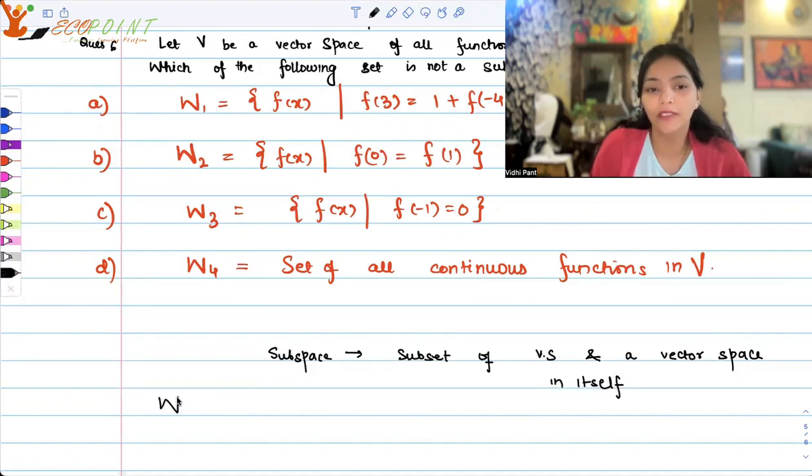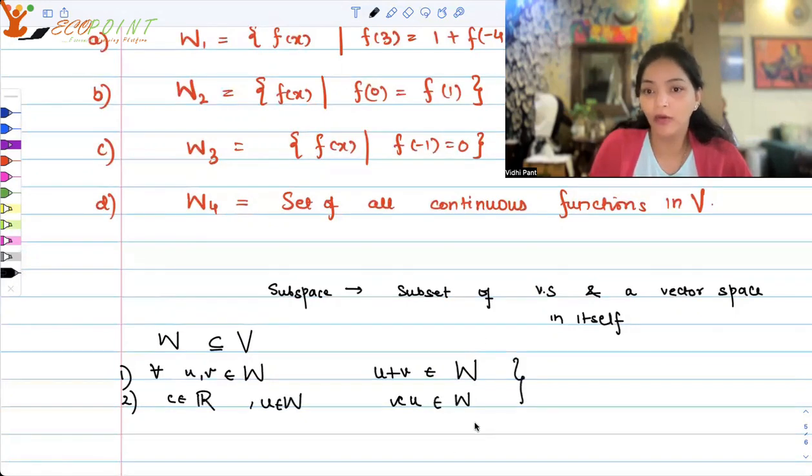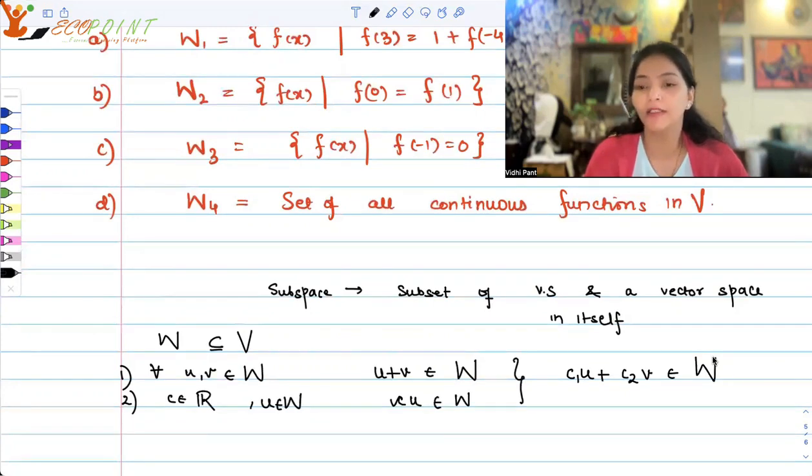So if W is the set that we are looking at and W is a subset of V, then for every u, v belonging to W, u plus v should also belong to W. And number two, for any scalar c belonging to R and any vector u belonging to W, c times u should belong to W. This could be combined also, which is one of the theorems in linear algebra. You can take a linear combination of these two vectors and say that if two vectors are in the set W, then its linear combination should be in W. And if that is happening, then W will be called not just a subset of V, but a subspace of V.